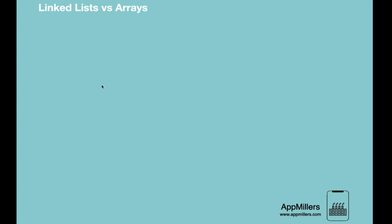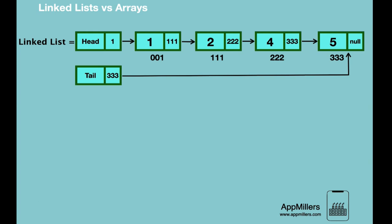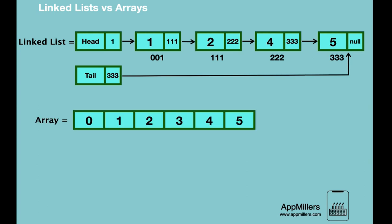The first and most important difference is that each element of a linked list is an independent object. If we don't need any of these nodes, we can delete it and the linked list will still exist. But in case of an array, the cells are not separate objects — we cannot delete the cell itself. We can delete the value, but the cell still exists in memory and occupies space.